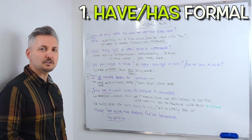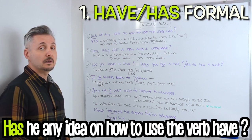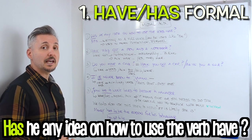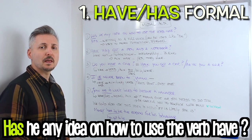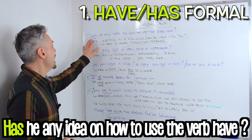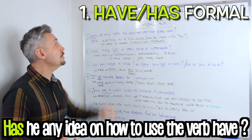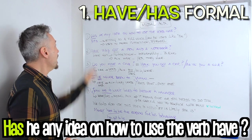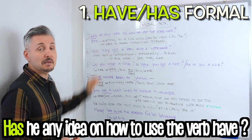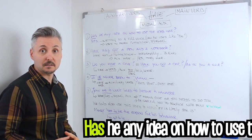My first introductory example was, has he any idea on how to use the verb have? The first thing we see here is that have is in the third person singular, has. Then we notice that have, or has in this case, is acting as a full verb, much like be. And then have in this case means possession. We only use this form in formal contexts.